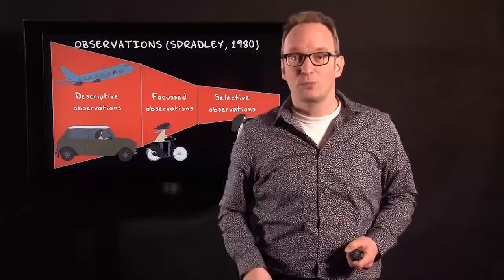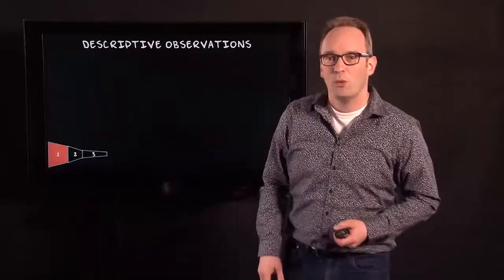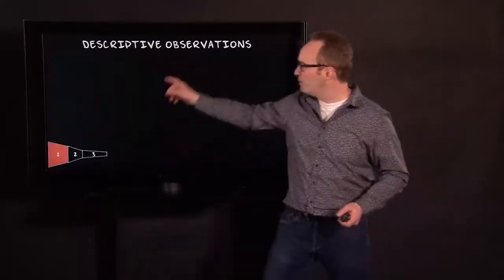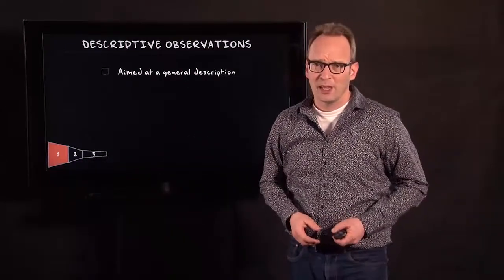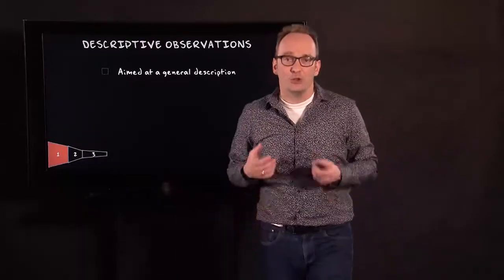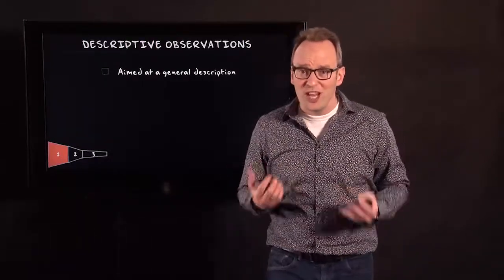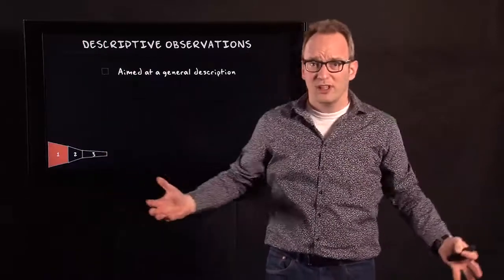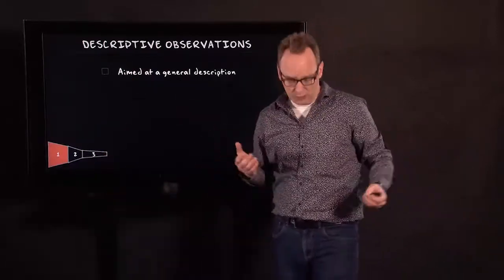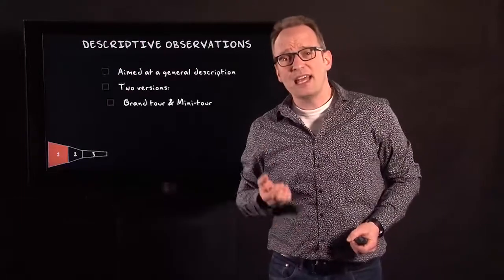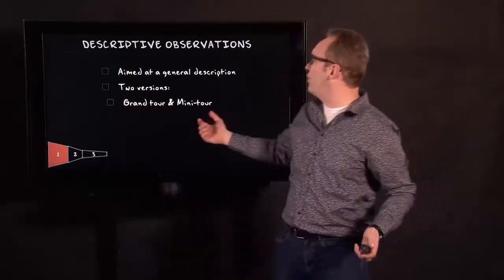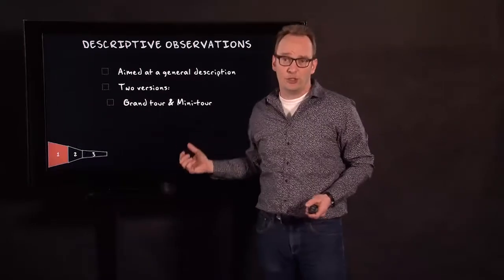But how does this work more specifically? Let's start with the descriptive observations — the first part of Spradley's scheme. What you want to do with these descriptive observations is create a general description of a certain group, area, or whatever you are studying. Spradley makes a distinction between two versions: the grand tour and the mini tour.